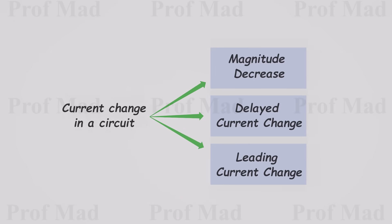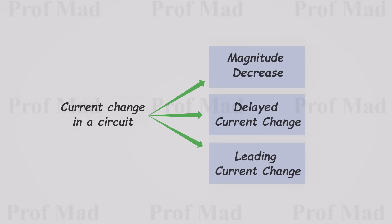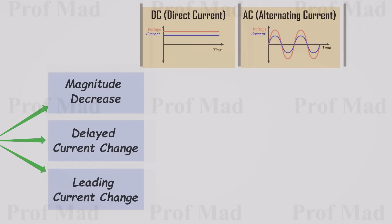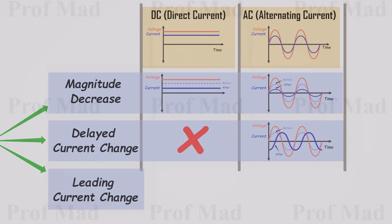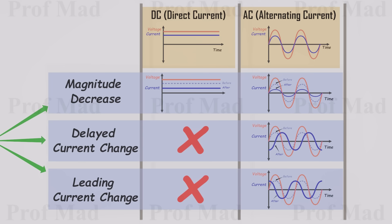We have now discussed three types of current changes in a circuit, depending on whether the current is AC or DC. The first type involves simply decreasing the magnitude of current, observable in both DC and AC circuits — in this scenario, current and voltage changes occur simultaneously. The second type entails current changes occurring after some time following a voltage change, which is unique to AC circuits since in DC circuits voltage remains constant. The third type involves current changing before a voltage change, and it is also exclusive to AC systems.